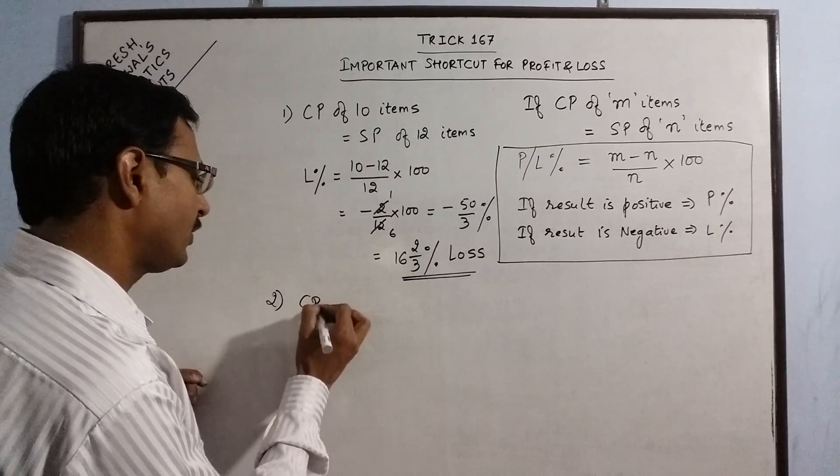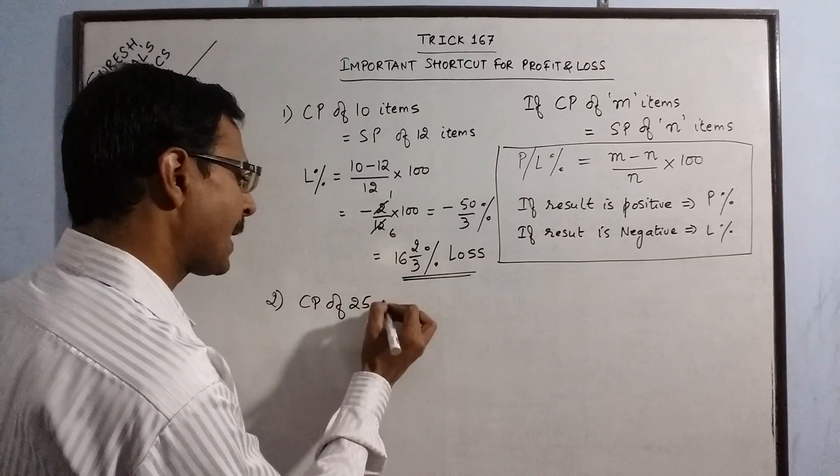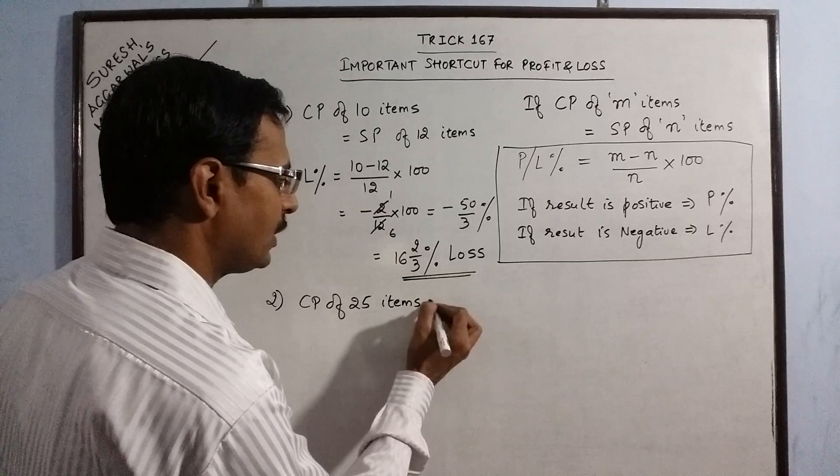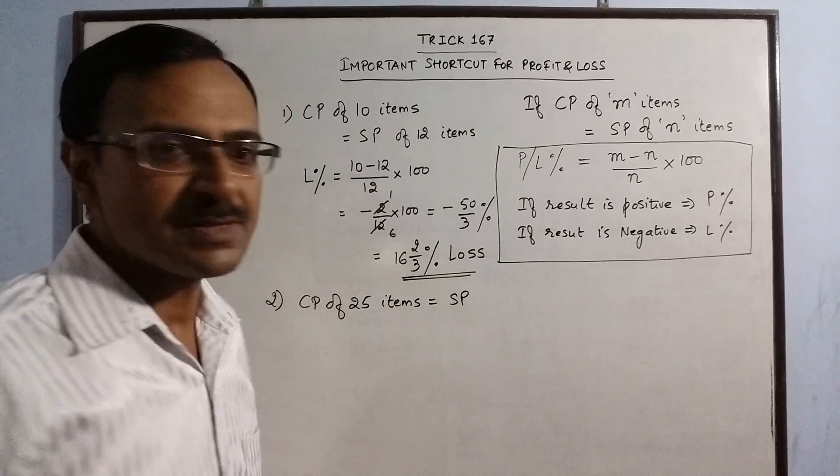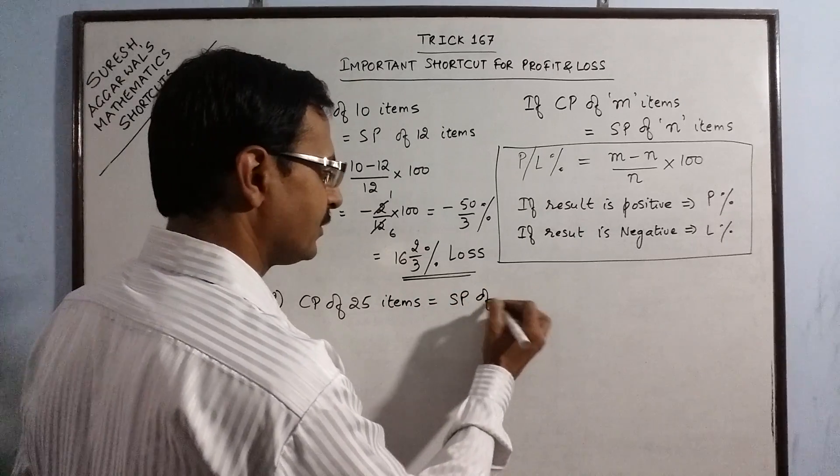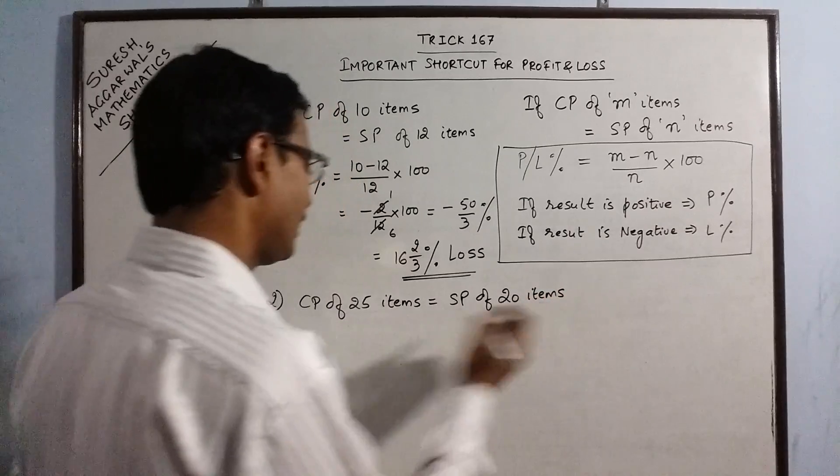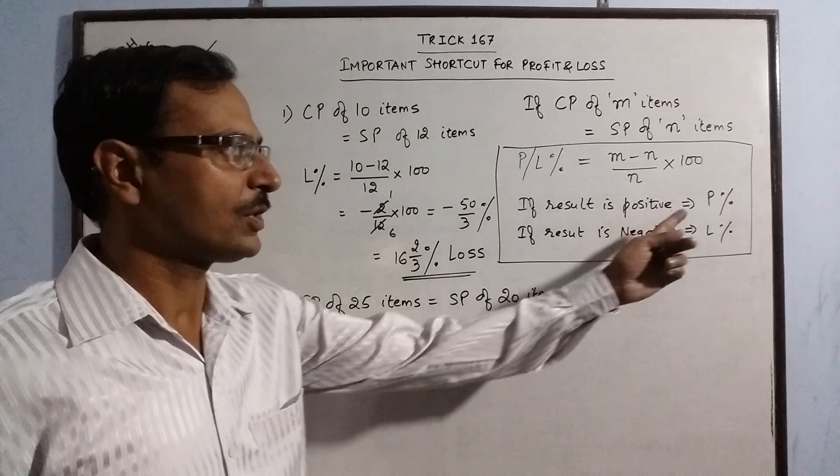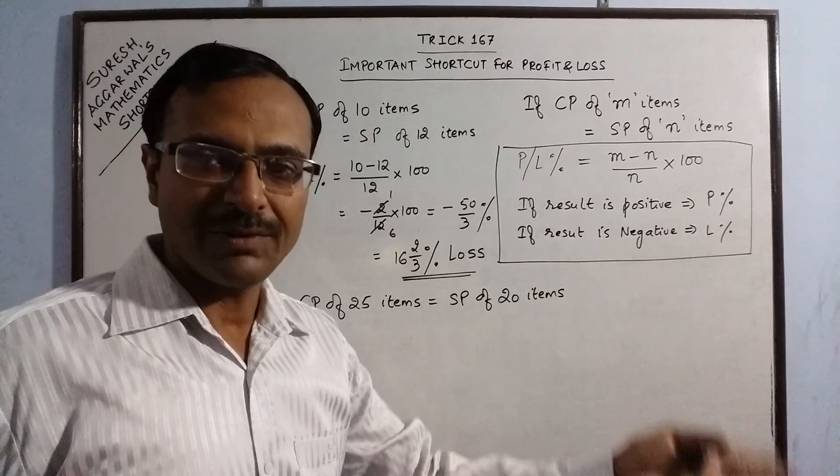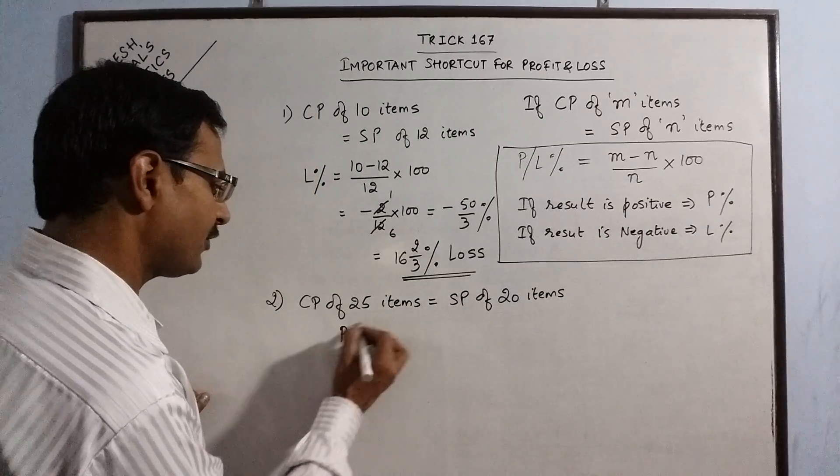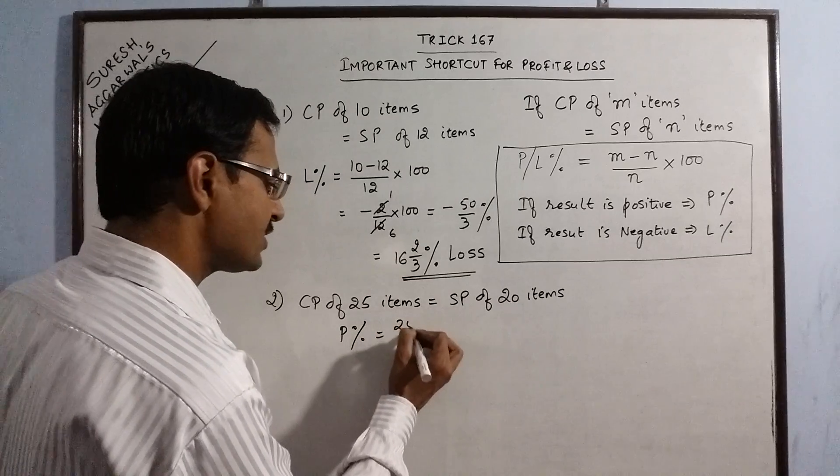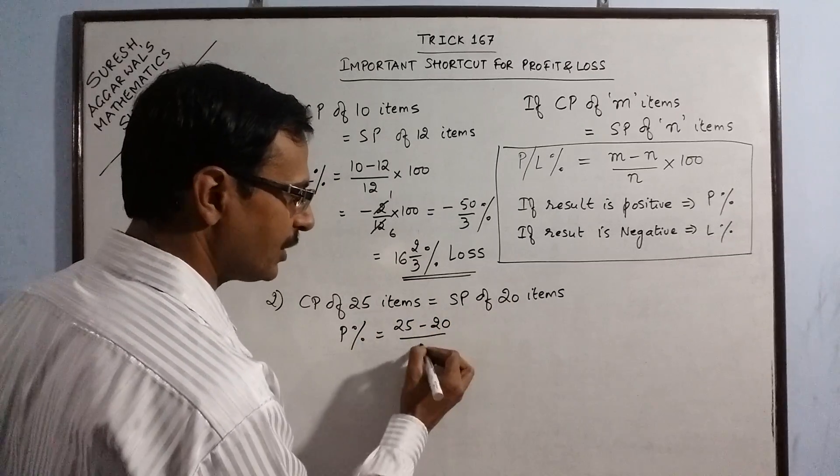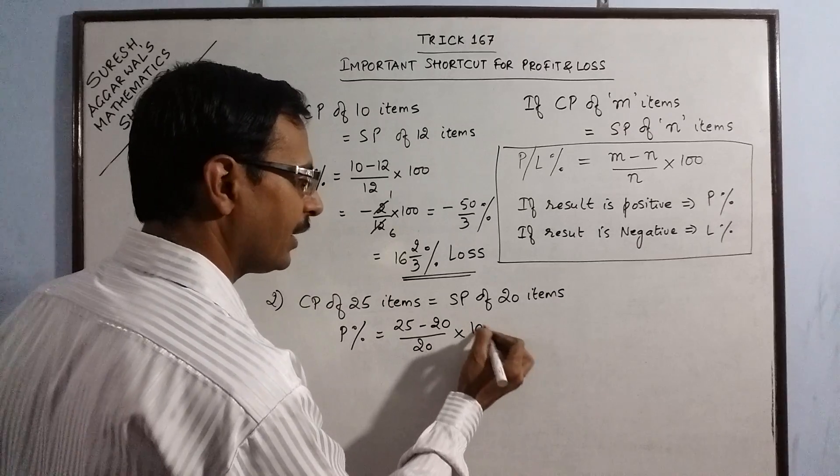Say, we have CP of 25 items as equal to SP of we have 20 items. Now, this time, this number is greater than this. So, we have m minus n as positive. So, if the result is positive, then we have profit percent. So, what is the profit percent? Difference 25 minus 20 divided by this number 20 into 100.